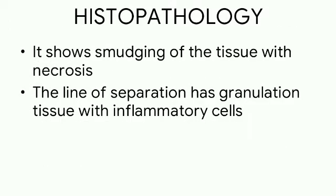Histologically, dry gangrene shows smudging of the tissue with necrosis, meaning damaging of the tissue. The line of separation has granulation tissue with inflammatory cells.